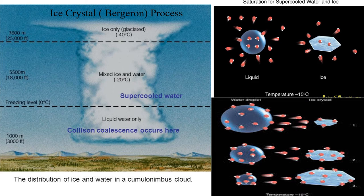Now we'll be talking about the ice crystal process. The ice crystal process is called the Bergeron process, named after the Swedish meteorologist who actually invented this process — that's why by his name it has been called the ice crystal or Bergeron process.